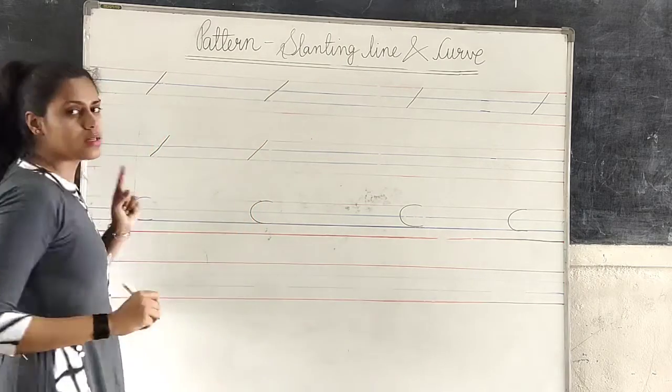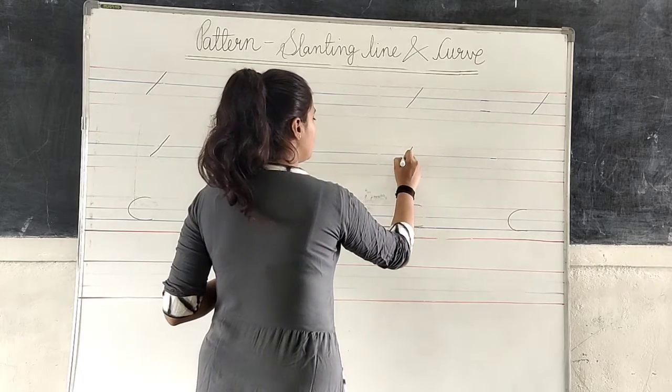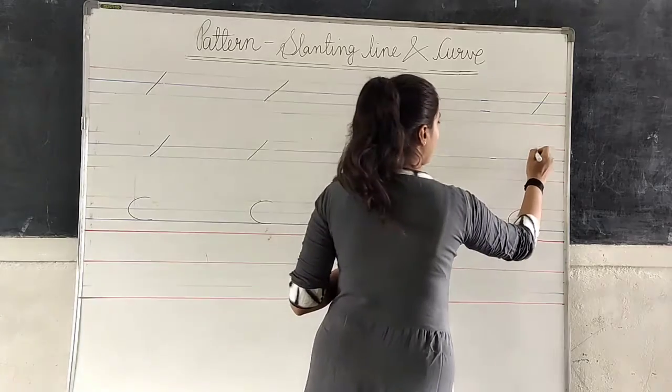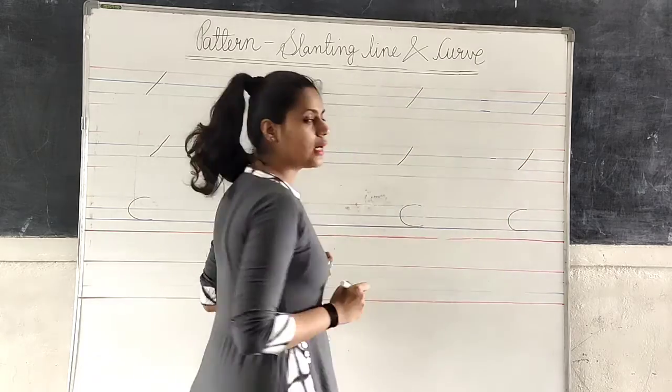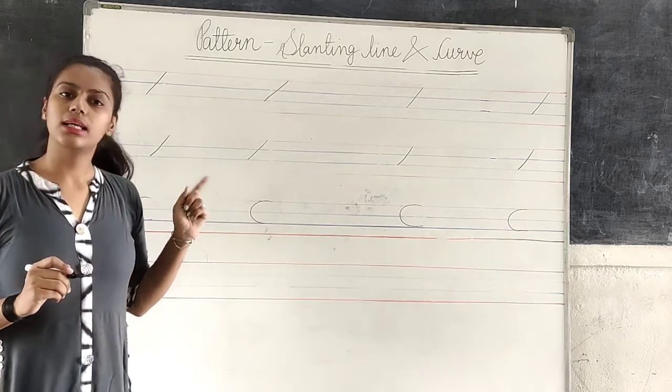First line to third line. Okay students? First line to third line. This is how we can draw a sliding line.